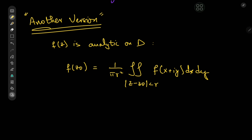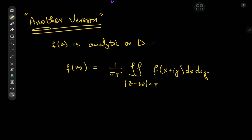You can even extend the notion of average value to get another version of this theorem that I came across as an exercise while teaching one of my students. In this version, we have f of z being analytic on some domain d — and we know that analytic functions are indeed harmonic. In this case, we take the average value over the entire disk centered at z-naught of radius r, and again we need it to equal the value of the function at the center of the disk. The proof here is quite simple; we have some nice integrals to deal with.